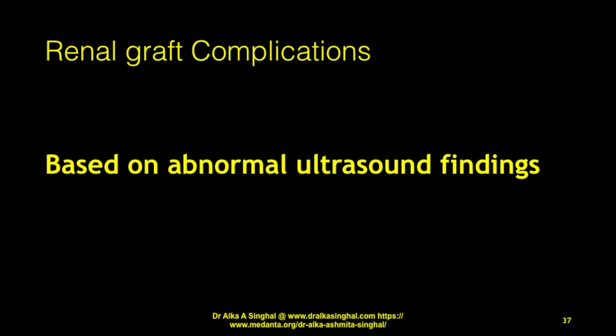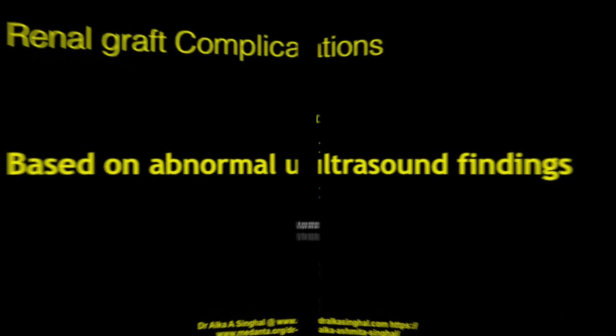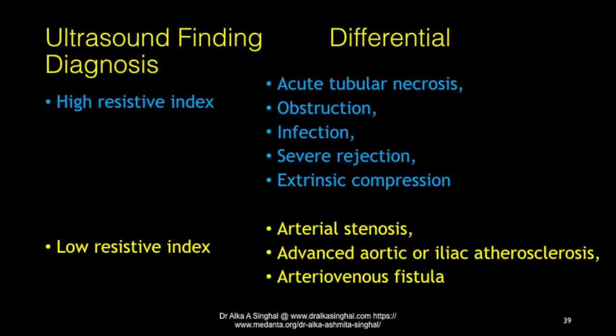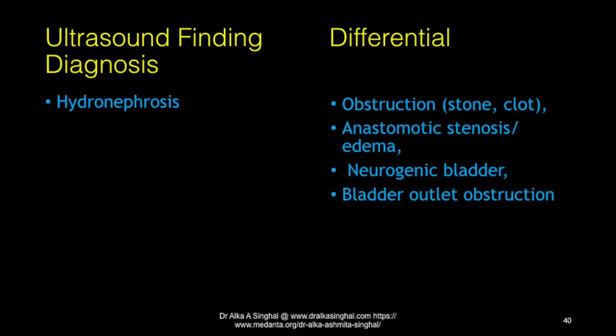Complications of the renal graft as per ultrasound findings: an increase in size of the renal transplant could indicate rejection, infection, or venous thrombosis. A decrease in size suggests chronic ischemia or chronic rejection. High RI values can be seen in acute tubular necrosis, obstruction, infection, severe rejection, or extrinsic compression. Low RI could indicate arterial stenosis, advanced arteriosclerosis, or AV fistula. Hydronephrosis can be seen with obstruction, stone, clot, anastomotic stenosis, neuropathic bladder, or bladder outlet obstruction.